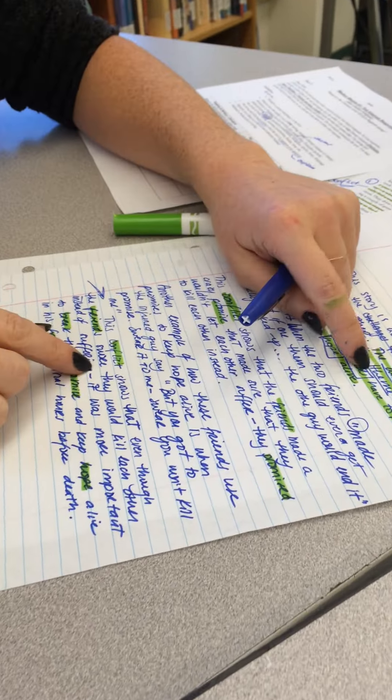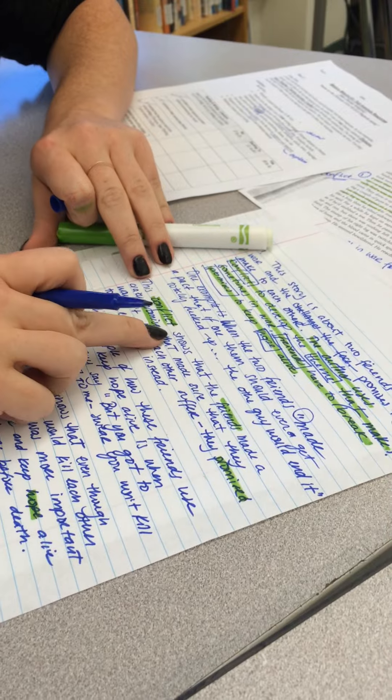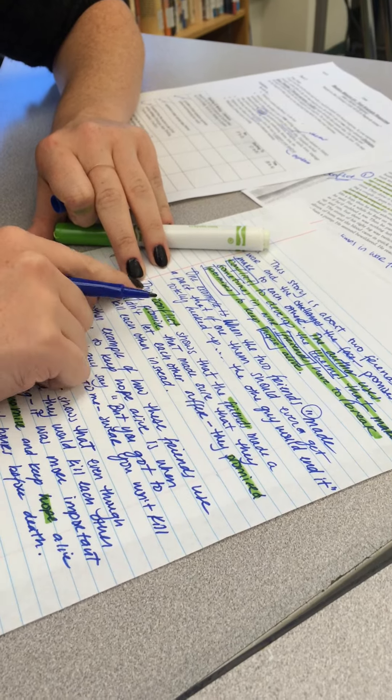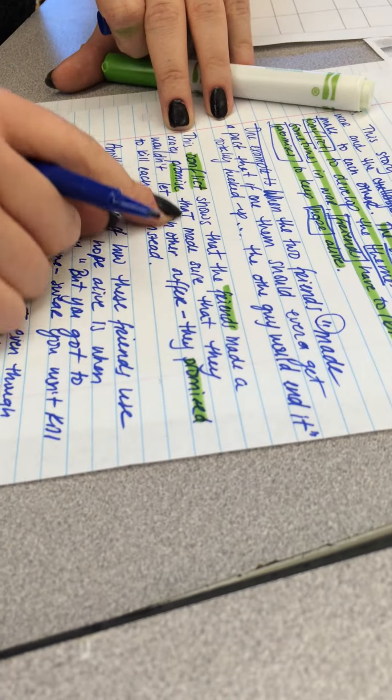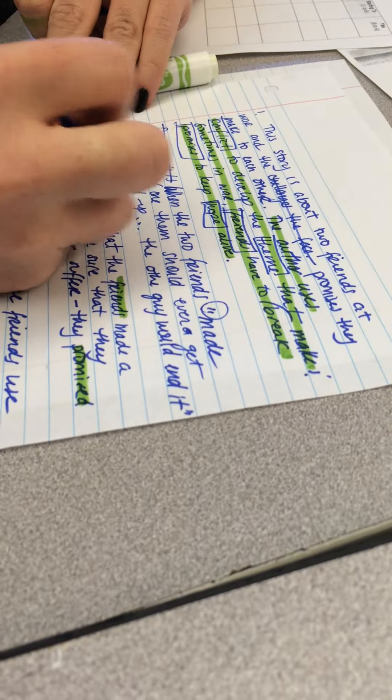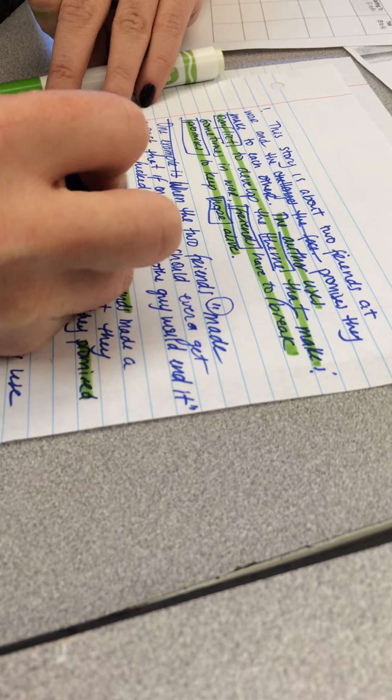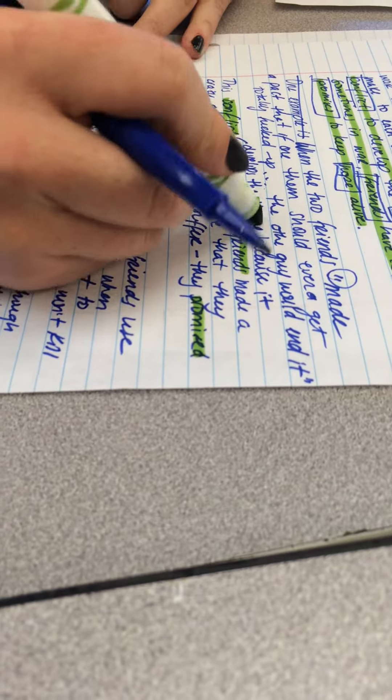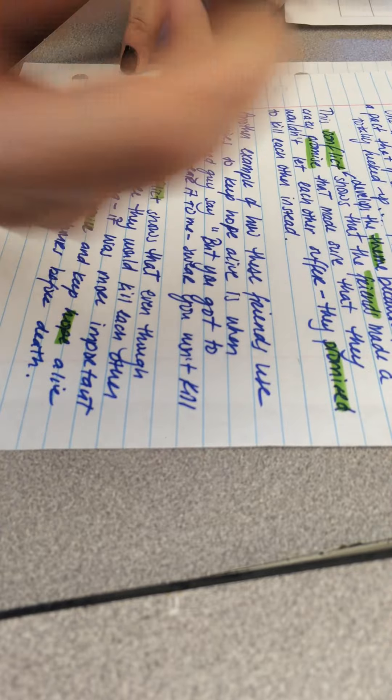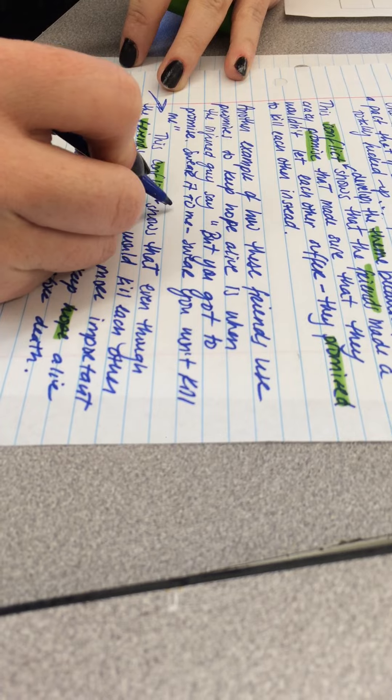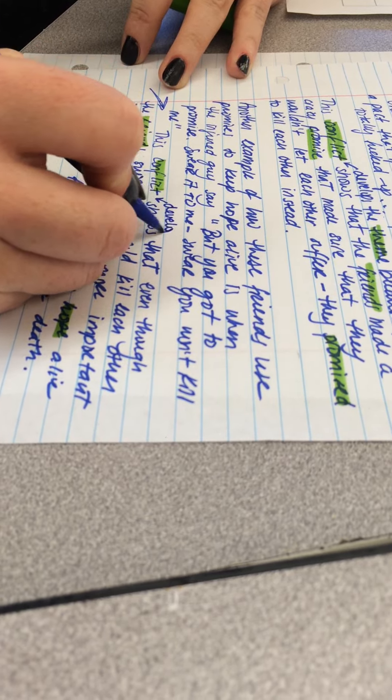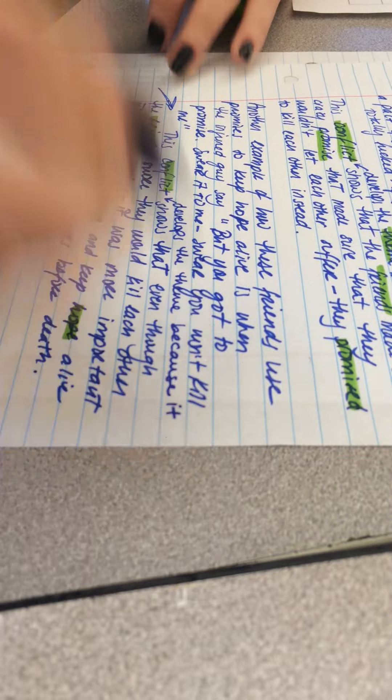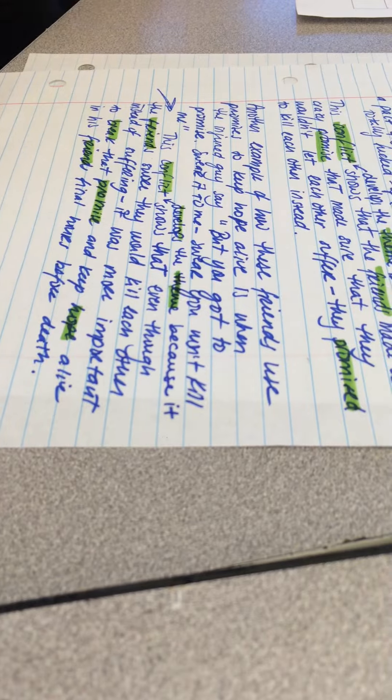You know what I might fix? Because I noticed I didn't use theme. I might be like, the conflict shows, the conflict shows that the friends made a promise, the conflict develops the theme because it shows. That way I have theme in here. I think I'm going to do the same thing here to make sure that I get a good grade. That this conflict develops the theme because it shows. So I have theme in here. Okay, and then I'm done.